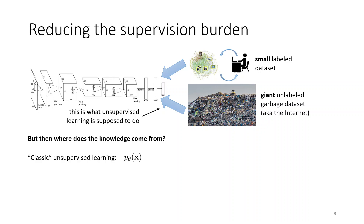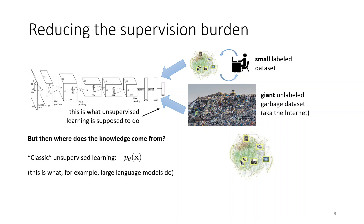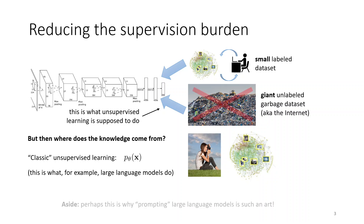The core of unsupervised learning is learning p of x, the distribution of the data set — essentially learning the process that produced the data. This is, for example, what large language models do. But if the whole premise is to leverage data of questionable provenance, cheap data sourced from the web, then learning p of x starts looking a little problematic. If we use images pulled off Flickr, we're learning about the kinds of pictures that people like to randomly photograph. And maybe that's why large generative models require carefully curated datasets, and why prompting large language models is such an art form.